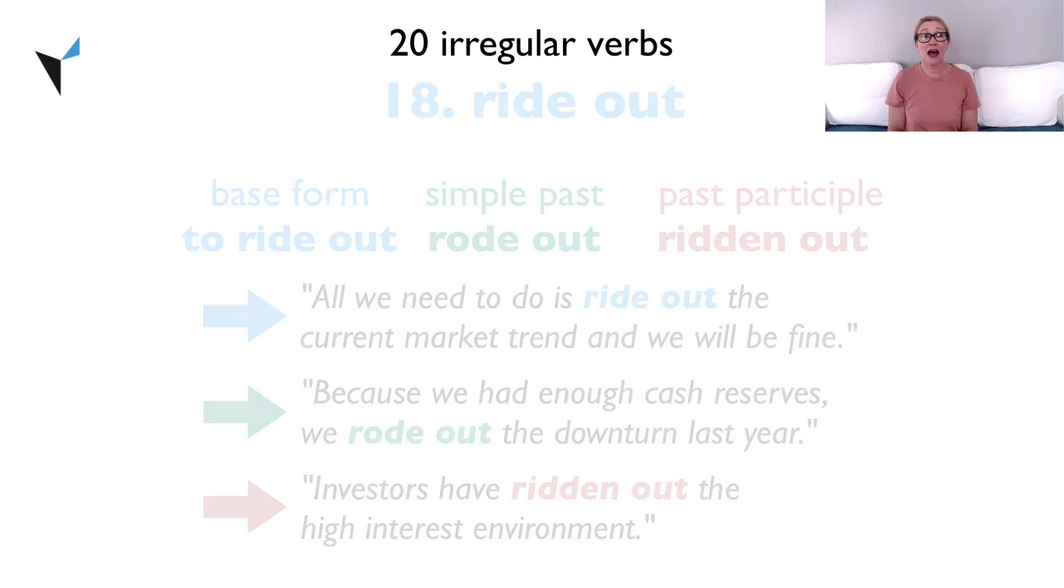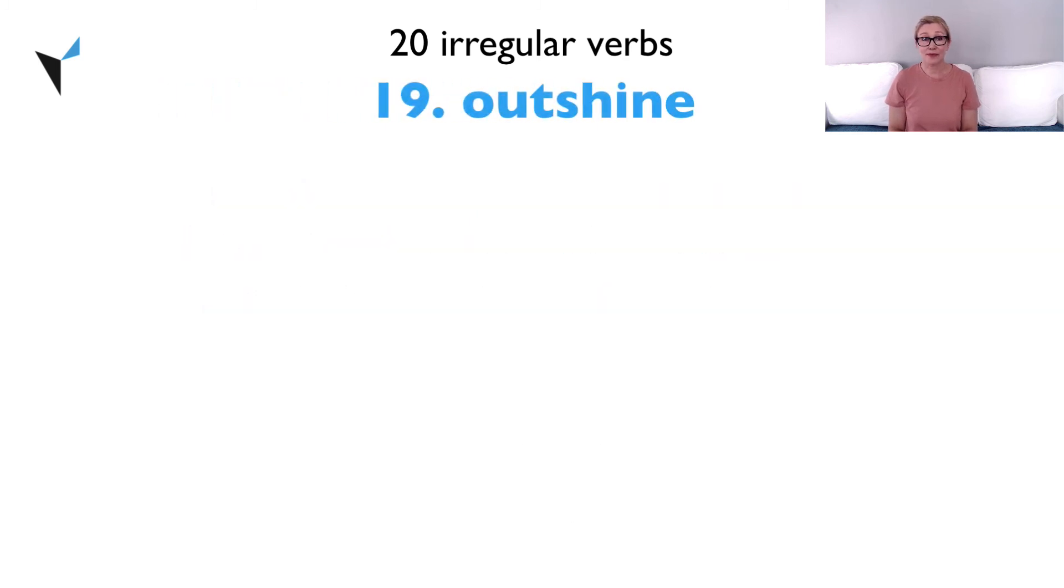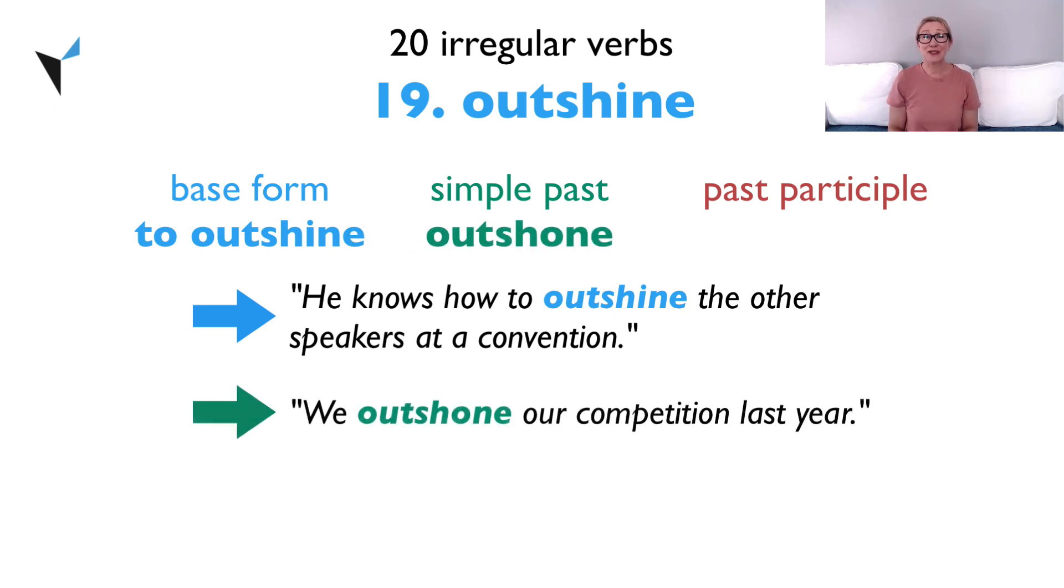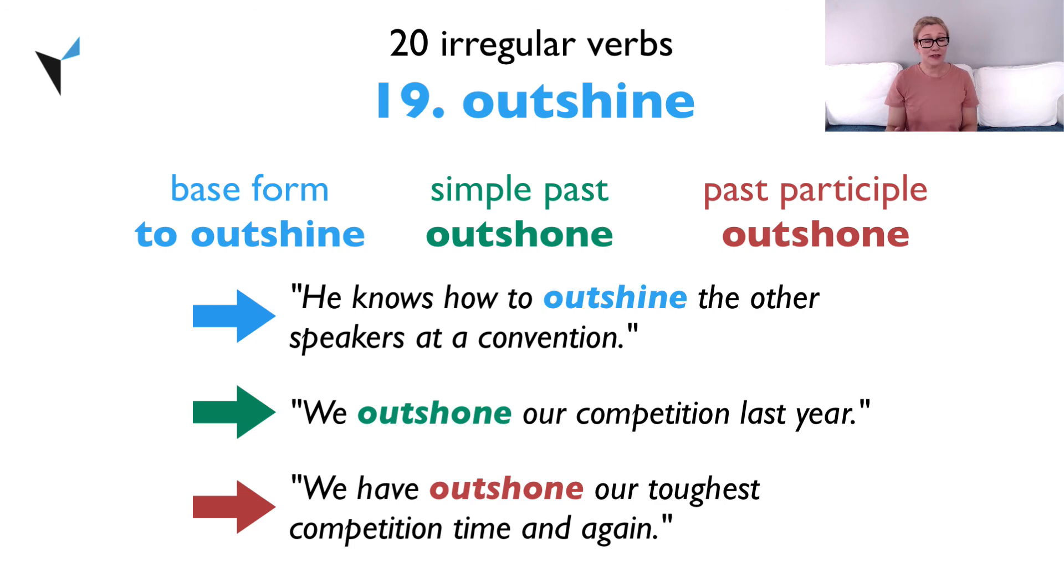Verb 19, outshine. The base form is to outshine. He knows how to outshine the other speakers at a convention. The simple past is outshone. We outshone our competition last year. And the past participle is also outshone. We have outshone our toughest competition time and again.